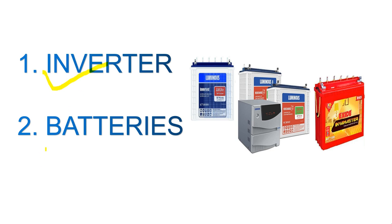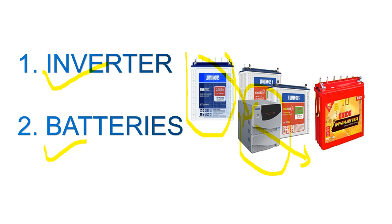First we will discuss about the inverter, then about the battery. The purpose of an inverter is: first the battery gets charged, it provides DC, and the inverter converts DC into AC. Through this AC, all your appliances — light bulbs, LED TV, and whatever load in your office or home — can be run on this inverter.